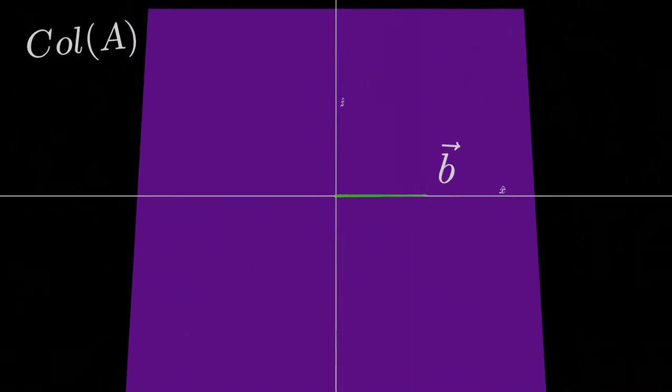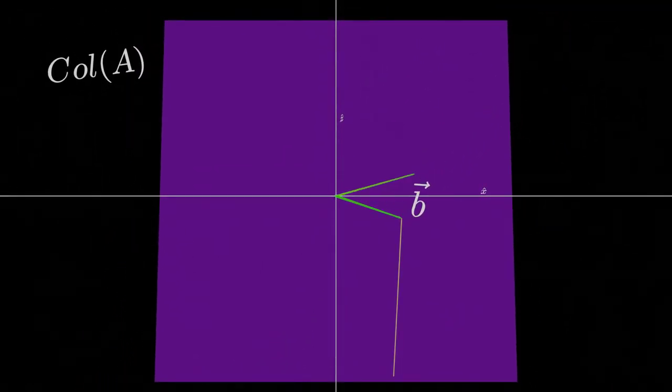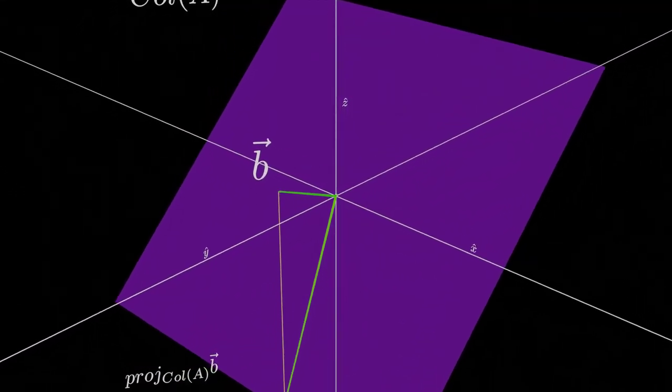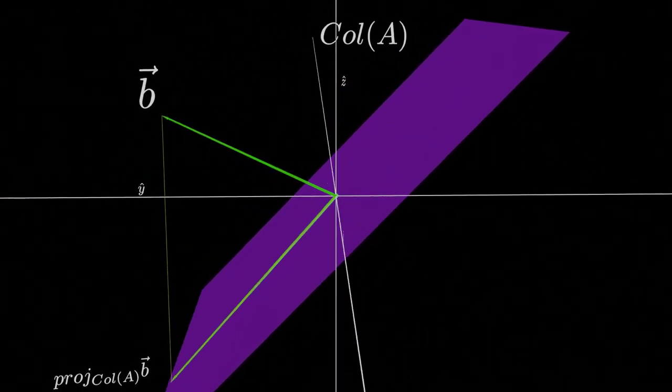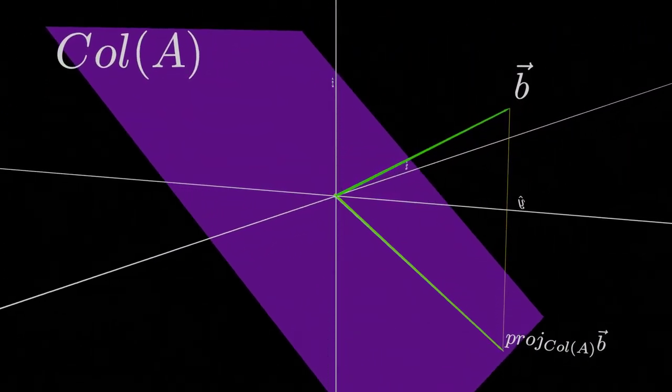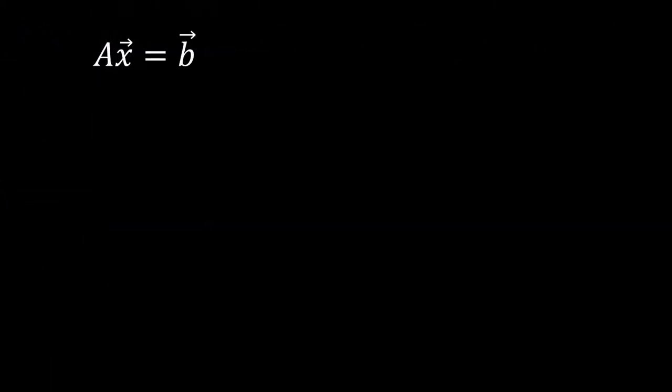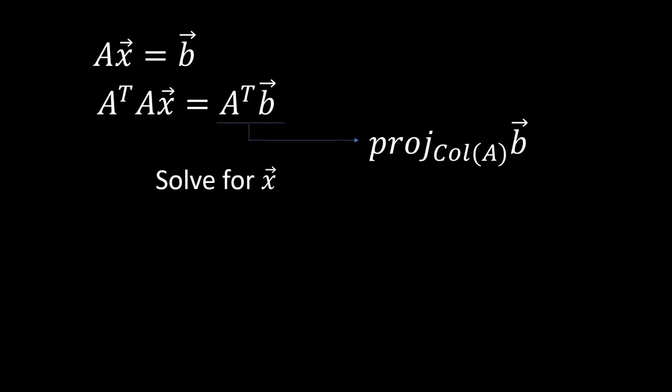We do this by projecting our B vector onto the column space of our A matrix, and then we find the best X vector that reproduces the projection of our B vector onto the column space. We do this by first taking our system and multiplying both sides by A transpose. What this does is it gives us the projection of our B vector onto our column space on the right-hand side of our equation. Then we just solve for the X vector through conventional means.